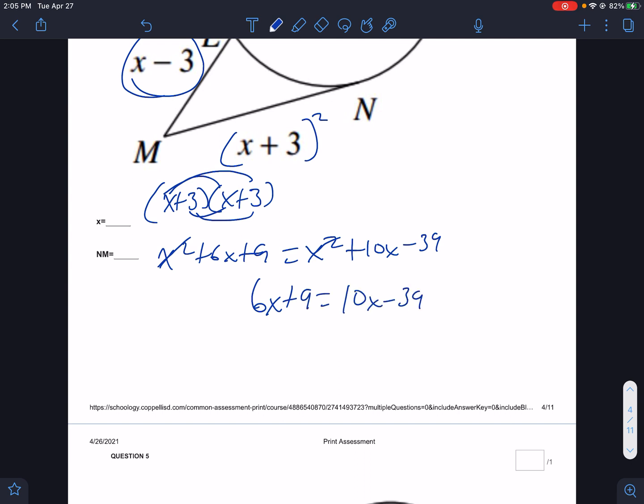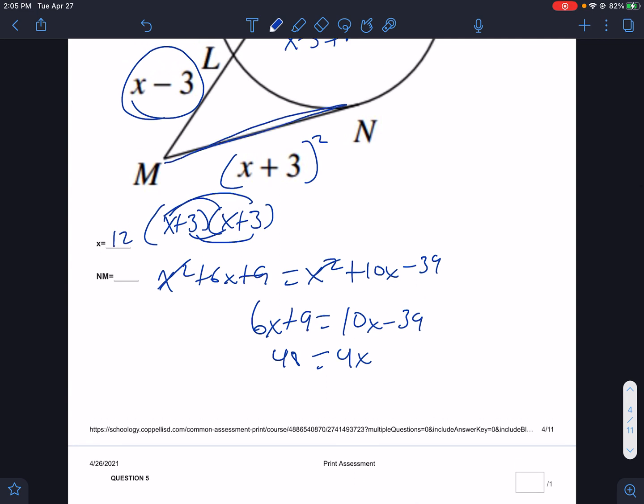Subtract x squared from both sides, and you are left with 6x plus 9 equals 10x minus 39. So x is going to be 12. We would get 4x equals 48. So x is 12. Now, they also want to know how long is NM. 12 plus 3, NM would be 15.